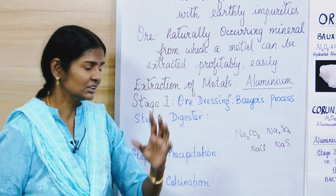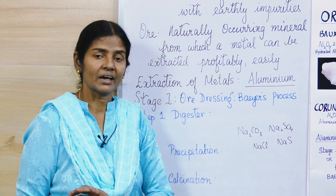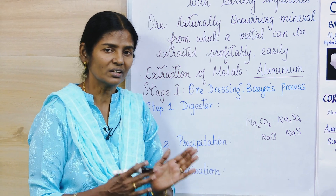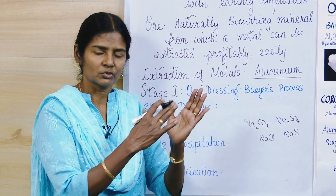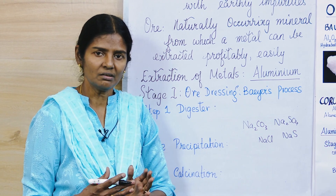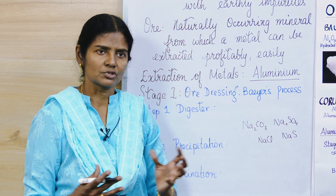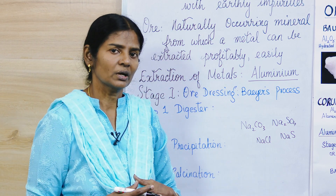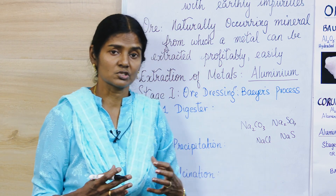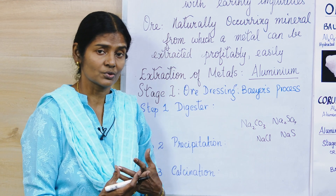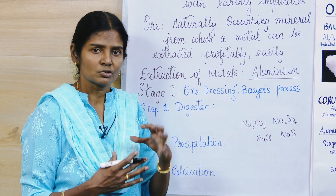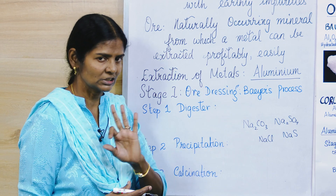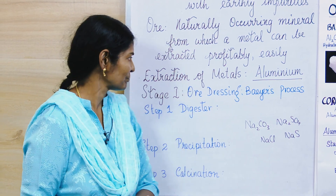The third term we need to know is gangue, or impurities. Gangue means impurities. During the extraction of a metal, the impurities found in the earth's crust — rocky impurities, other minerals, other ores — these form the impurities and that is called gangue. So these are the three terms that we need to know.